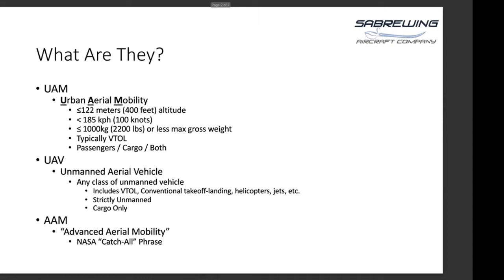The real distinctive portion is the weight, the airspeed, and the altitude in which they fly. And then there's UAV, which is what our aircraft specifically is — strictly an aircraft that does not carry people, so it's unmanned. The typical cargo UAV will fall under the UAV heading. It's really any class of unmanned aerial vehicle. That includes VTOL and fixed wing aircraft. It strictly carries no passengers — cargo only.